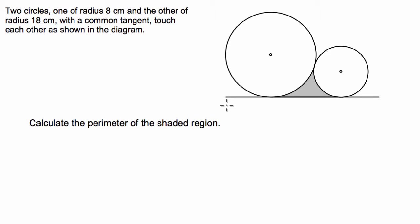Hi guys, I've been asked to do a geometry question with you today. The question's about two circles that touch each other in one place. We have to find the perimeter of the shaded region, which is the area that's bound between where they touch the ground and where they touch each other. So let's get straight into it.